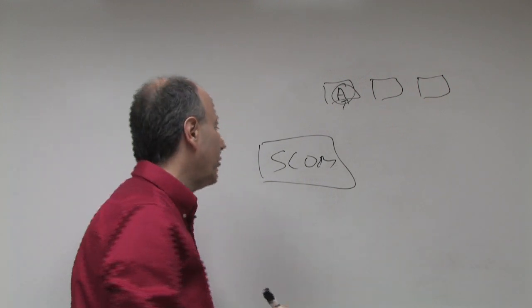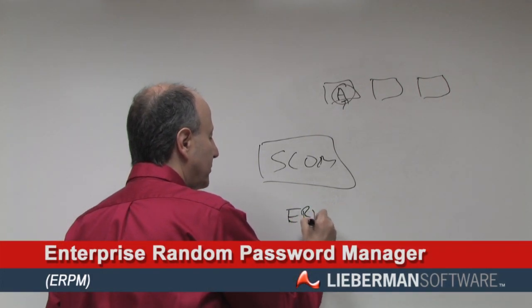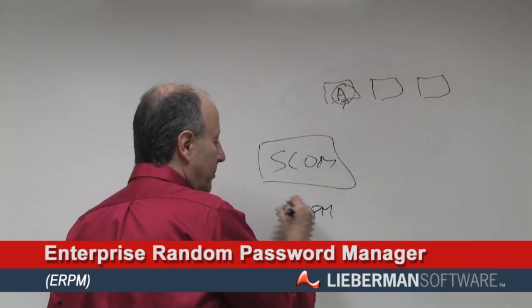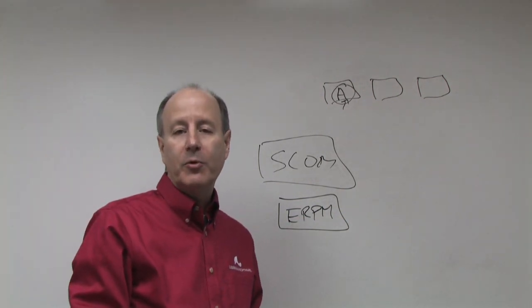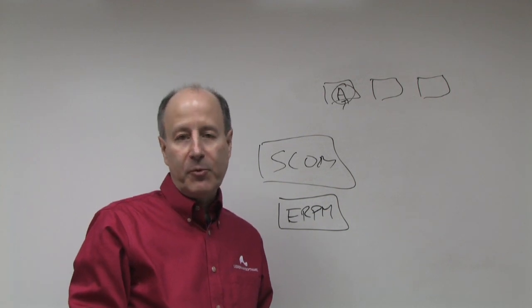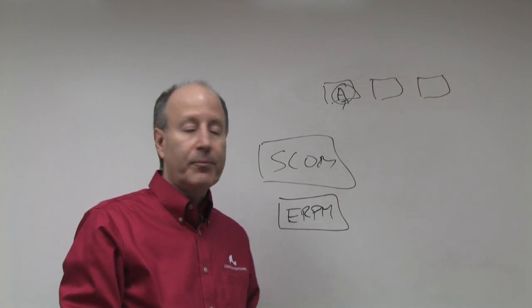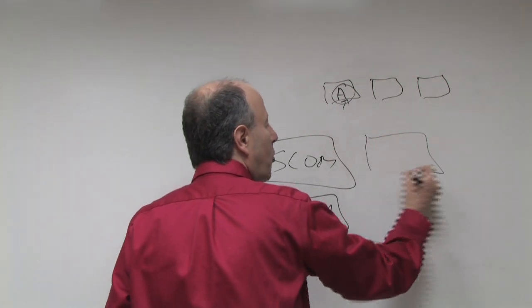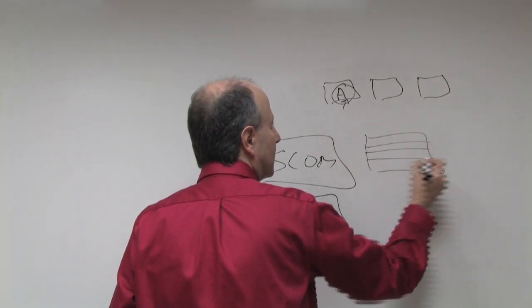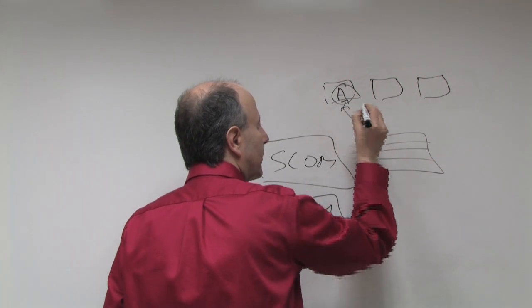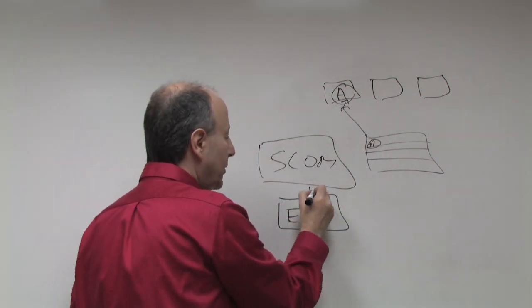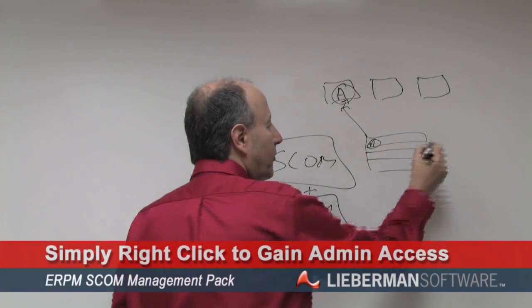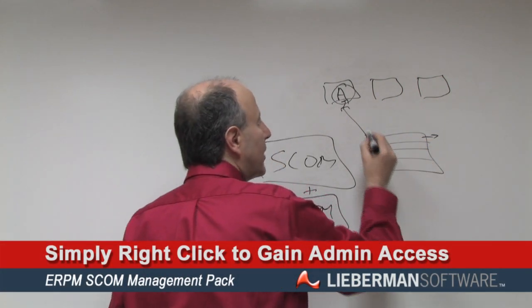The answer is our product called Enterprise Random Password Manager, also known as ERPM. ERPM already has stored all of the credentials for root-level and administrative-level access to all systems being managed by SCOM. So if SCOM reports a problem and that's the system you need access to, and the integration is done between our two products using the management pack, it's simply a matter of right-clicking to gain access to the administrator account. It's as simple as that.